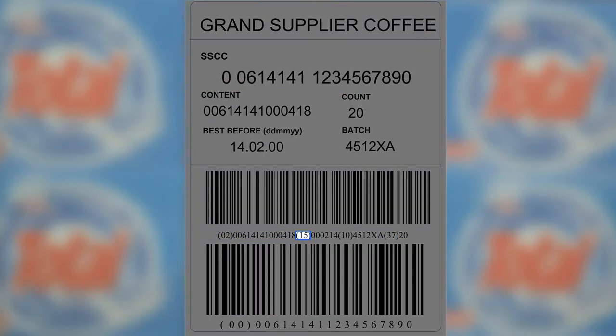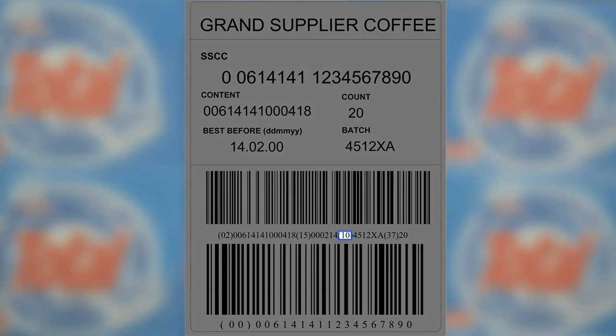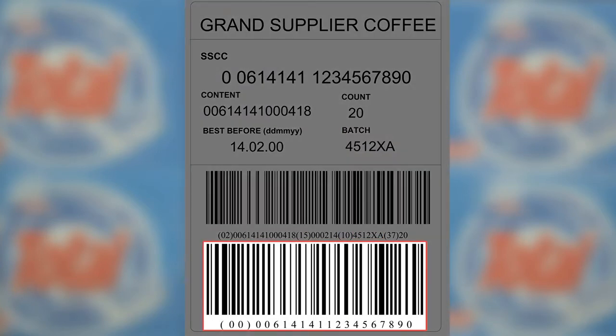The AI15 defines the 6-digit best before date using the format year, month, and day. The AI10 defines the batch number, up to a maximum of 20 digits. The SSCC is always the lowest barcode symbol on the GS1 logistic label. There are currently more than 150 application identifiers, and your local GS1 member organization will be happy to help you choose the right AIs for your needs.